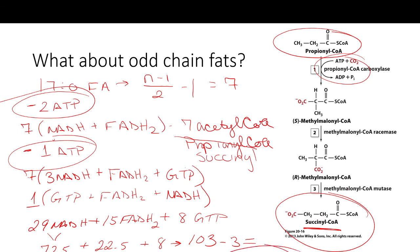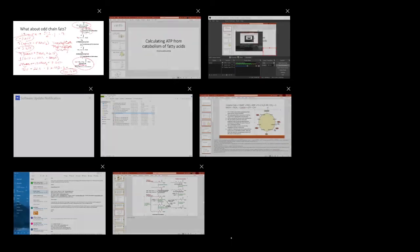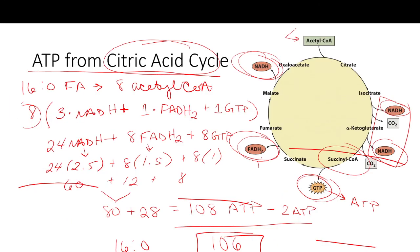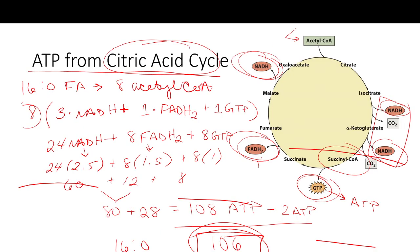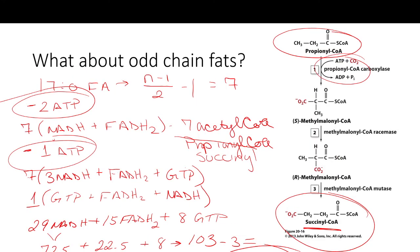Interestingly, the 17:0 fatty acid with one more carbon yields only 100 ATP, while the 16:0 fatty acid with one less carbon gives 106 ATP. So we actually get a little more efficiency from even-chain fats. The 6 ATP difference comes from the net loss of two NADHs when succinyl-CoA enters the cycle at the midpoint, plus the extra ATP burned in the propionyl-CoA conversion.